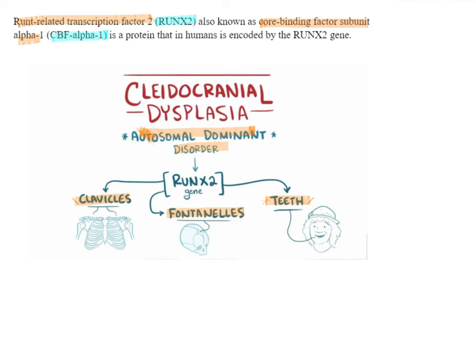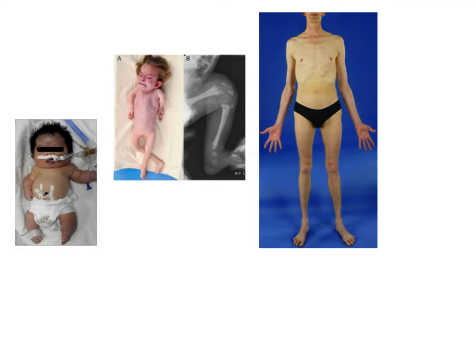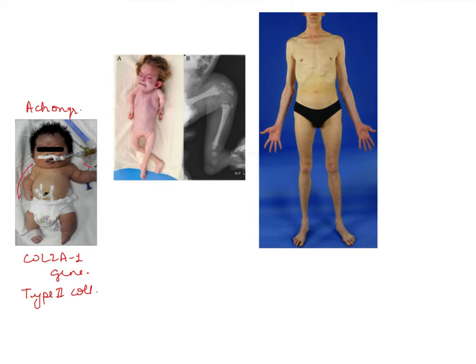Moving to the other options, achondrogenesis involves a defect in the COL2A1 gene, which provides instructions for the formation of type 2 collagen. In this condition, the patient will have shortening of the arms and legs in relation to the trunk — a form of dwarfism — along with abnormal development of the ribs, vertebrae, and other skeletal abnormalities. Overall, growth is stunted in achondrogenesis.